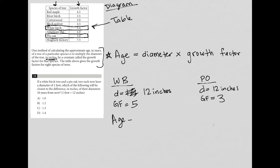Now it's going to be the diameter, which is 12 inches or 12 times five, which means this white birch is actually 60 years old. And how about the pin oak? So, again, its age is going to be equal to its diameter, 12, times its growth factor, 3. So its age is 36 years old.